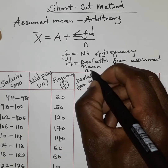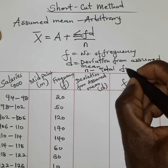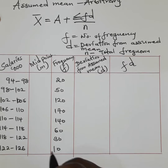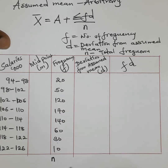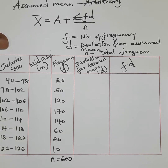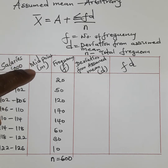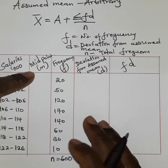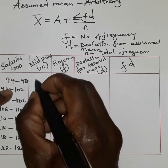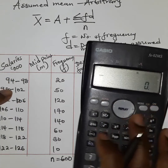N refers to the total frequency. When we add all the frequencies together, we get n = 600. We also introduce the element of midpoints, because the midpoints are going to help us determine the true mean and the actual position of the mean for this particular data.